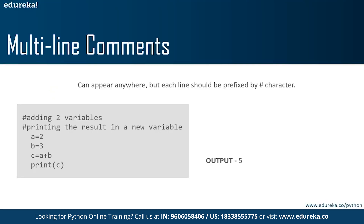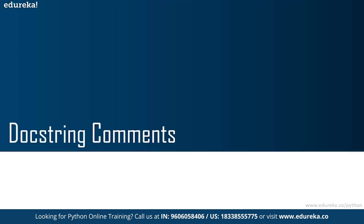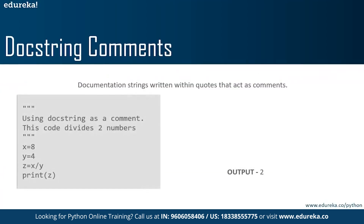Many think that comments and docstrings are the same. Docstrings are not actually comments — they are documentation strings written within triple quotes. They are not assigned to any variable and are often used as comments. The key difference: comments are omitted by the interpreter — nothing after the hash character is read. Docstrings, on the other hand, are strings that describe something about the code. Docstrings tell what a function is going to do, whereas comments tell how it is going to do it.